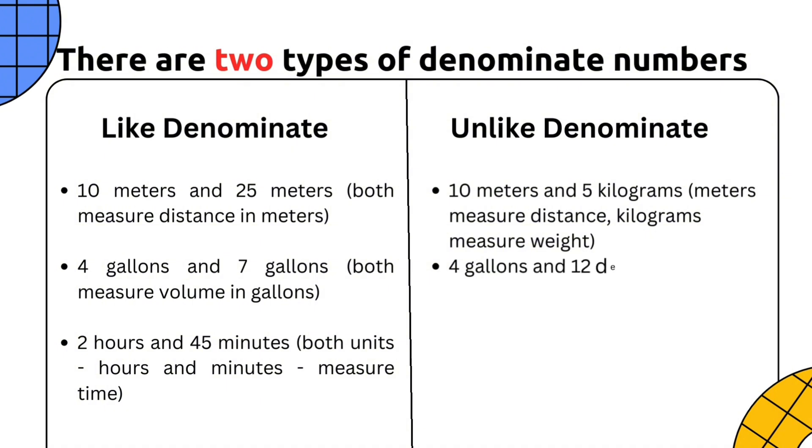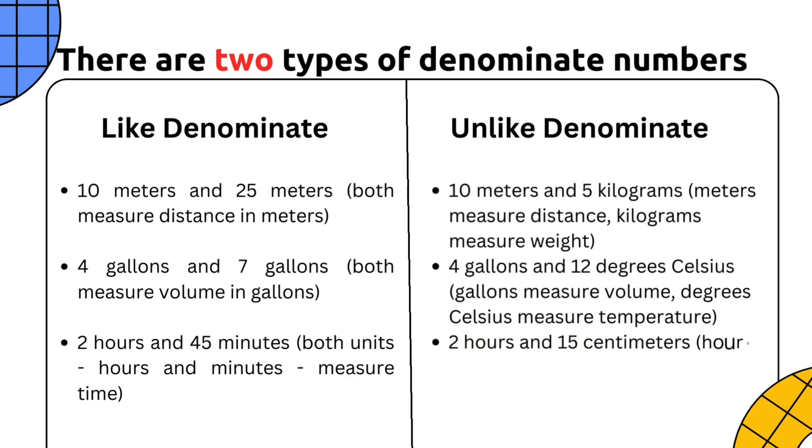Another example, 4 gallons and 12 degrees Celsius, gallons measure volume, degrees Celsius measure temperature. And 2 hours and 15 centimeters, hours measure time, centimeters measure length.